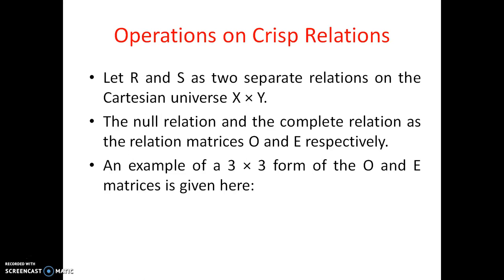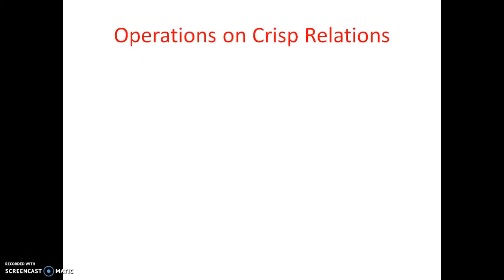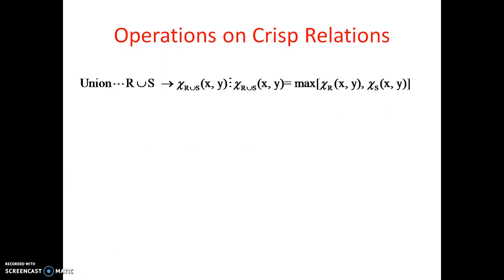Here is an example of the three-by-three form of the O and E matrices. O is the null relation - all elements are zeros - and capital E is the complete relation - all elements are ones. We will use these in our further operations and properties. Now let's go to operations. The first operation, as we know, is union: R union S.